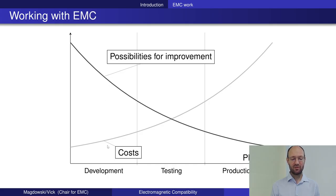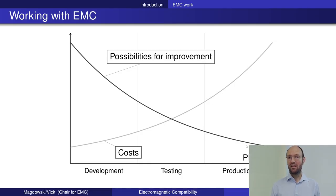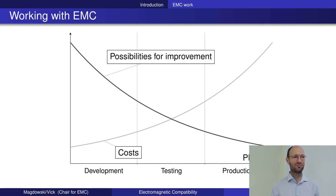You have many chances for improvement at low cost early on. If you go into testing, you already have fewer chances for improvement, and any improvements come with larger costs. If you go into the production phase, the only thing you might do is send a filter to each of your customers to make the product EMC compliant — and if you've already sold a thousand units, you'll have to ship a thousand filters, which will be very costly.